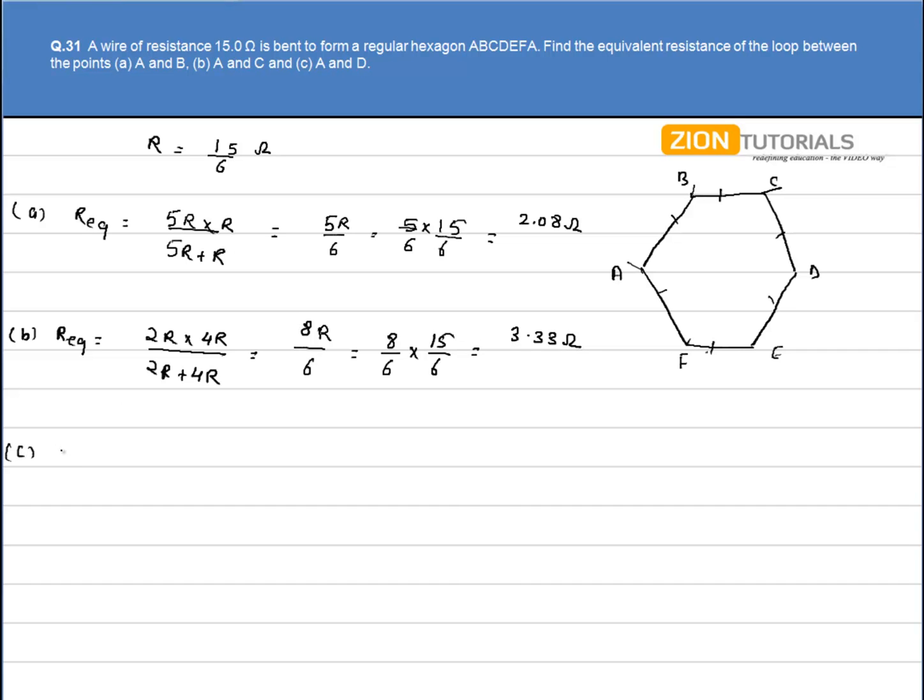In case C, R equivalent is to be calculated across A and D. We have A, B, C in series, and A, F, E in series and their equivalents are in parallel.